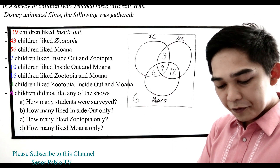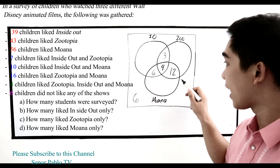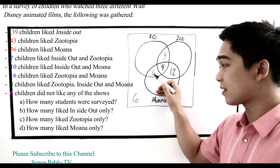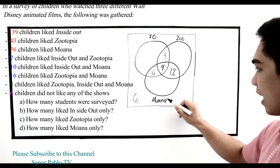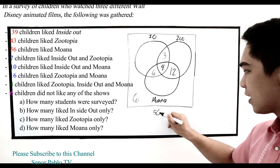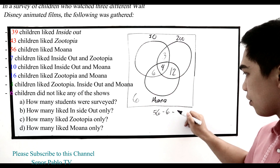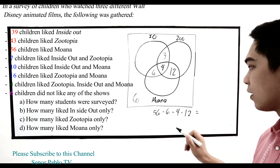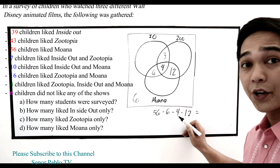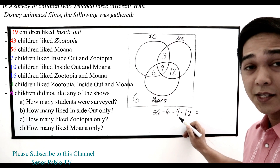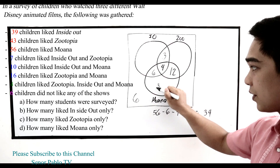Now for Moana: 56 children like Moana. We subtract all the intersection values that belong to Moana: minus 6 (Inside Out and Moana), minus 4 (all three), minus 12 (Zootopia and Moana). So 56 minus 6 minus 4 minus 12 equals 34. We write 34 in the Moana-only region.